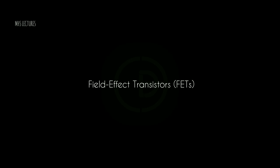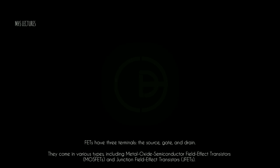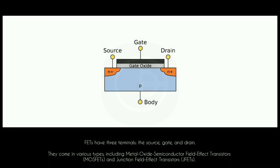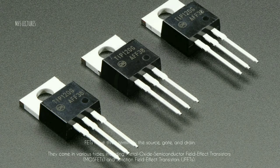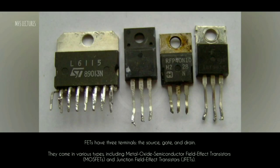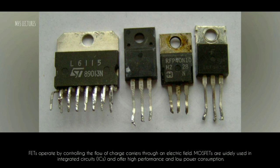2. Field effect transistors (FETs) — FETs have three terminals: the source, gate, and drain. They come in various types, including metal oxide semiconductor field effect transistors (MOSFETs) and junction field effect transistors (JFETs). FETs operate by controlling the flow of charge carriers through an electric field. MOSFETs are widely used in integrated circuits (ICs) and offer high performance and low power consumption.